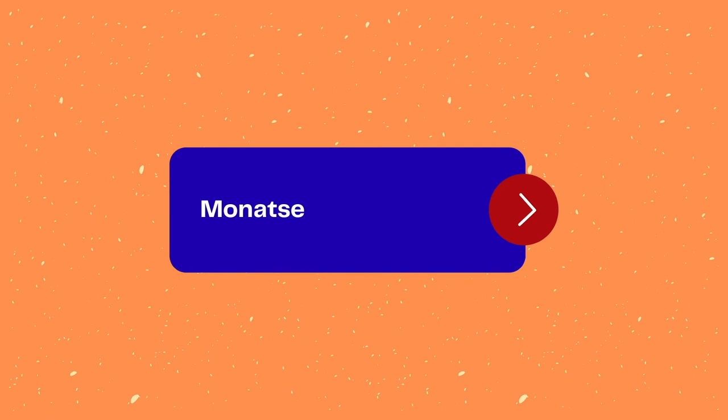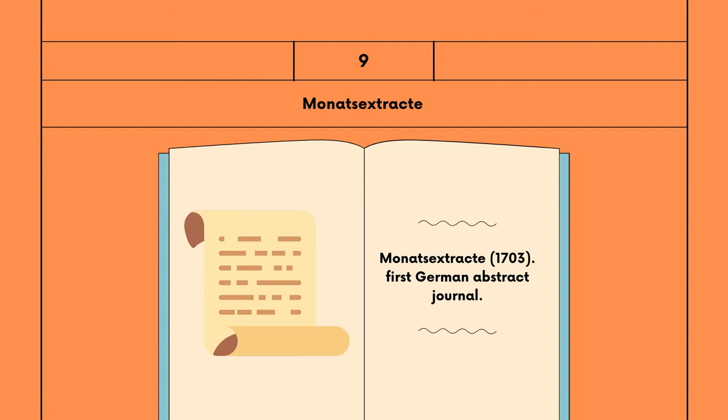Monats Extracte is the first German abstract journal, published in 1703.